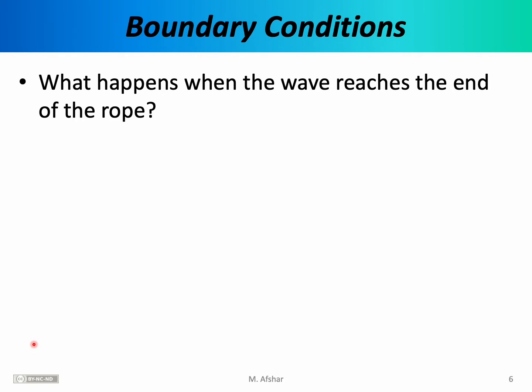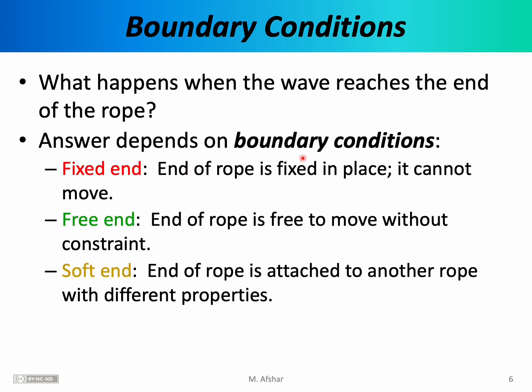In our discussions of rope waves so far, we've ignored one very important question: what happens when the wave reaches the end of the rope? Up until now, we've been pretending the rope is infinitely long, so that the wave is generated on the left end and can keep going forever. Real ropes have a finite length and the wave does eventually reach the end. The answer to that question depends on the boundary conditions, which tell us what's happening at the end of the rope and describe the constraints placed on the movement of the rope at its endpoints.